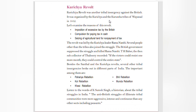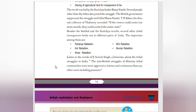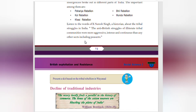The Kurchiya Revolt was organized by the Kurchiya and Kurumba tribes of Wayanad in 1812. Reasons included: imposition of excessive tax by the British, compulsion of paying tax in cash, and seizure of agricultural land for non-payment of tax. The revolt was led by Kurchiya leader Ramanambi. Several people other than the tribes also joined the struggle. The British government suppressed the struggle and killed Ramanambi. The then Sub-Collector of Valapatnam recorded: 'If the writers could resist one more month, they could control the entire state.' Besides the Santal and Kurchiya revolts, other tribal insurgencies included the Paharia, Kol, Kazi, Bhil, and Munda rebellions. A historian noted that struggles of illiterate tribal communities were more aggressive, intense, and continuous than any other section, including peasants.